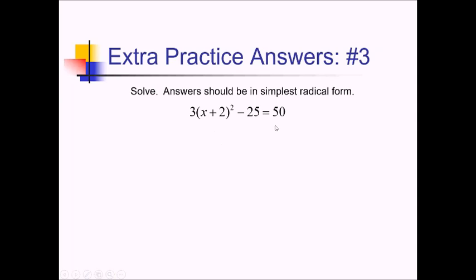Trying to solve this equation, I notice that we have only a squared term and a bunch of constants. Since that's the case, I can try to solve this one by isolating the squared term and then square rooting both sides. To start that process of isolation, let me add 25 over to the other side — that will give me 75 over there. And continuing the process, I need to divide both sides by 3. 75 divided by 3 gives me 25.